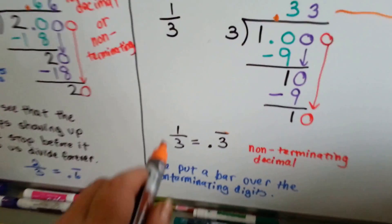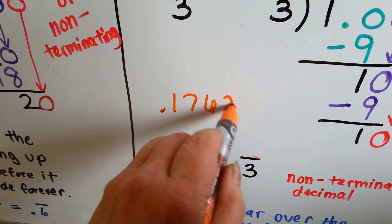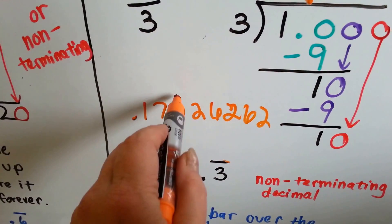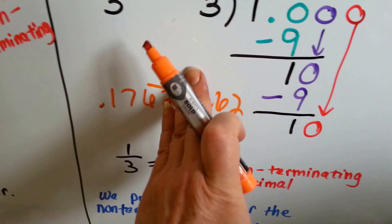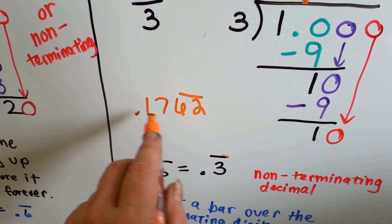If we had a number like .17626262, we know the .62 is repeating, so we just put the bar over that, and we don't write the rest of it, and we don't put a bar over the .17 because it didn't repeat.